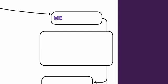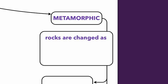Igneous rocks form from cooling and solidified magma. Sedimentary rocks form from compacted and cemented sediments. And now, metamorphic rocks — these are ones that are going to undergo some sort of change, a metamorphosis. What drives that change is exposure to really intense heat or intense pressure. So, metamorphic rocks are rocks that are changed as a result of exposure to intense heat and/or pressure.